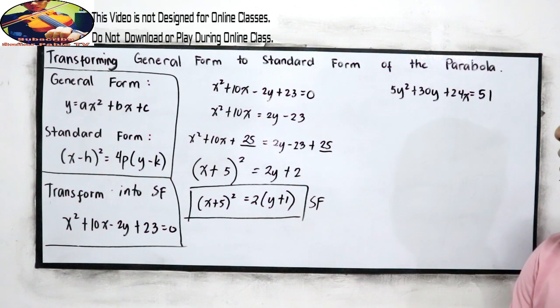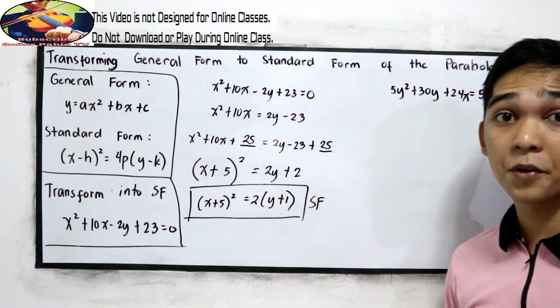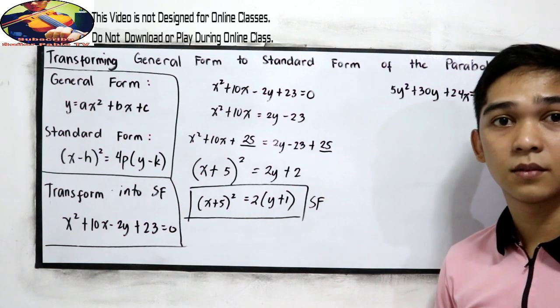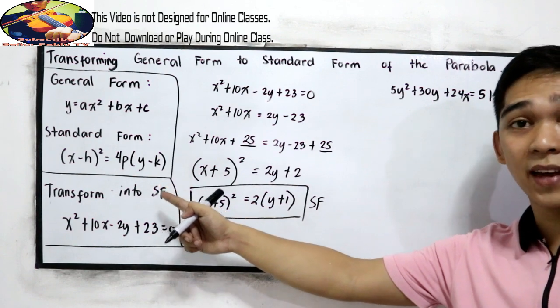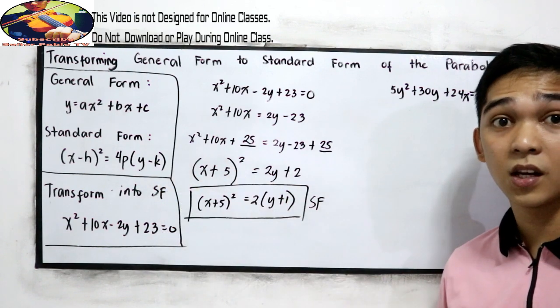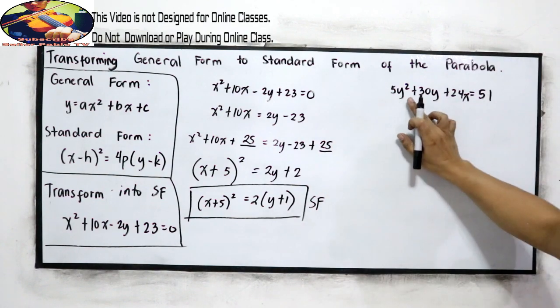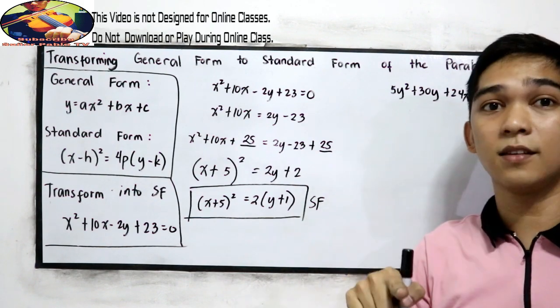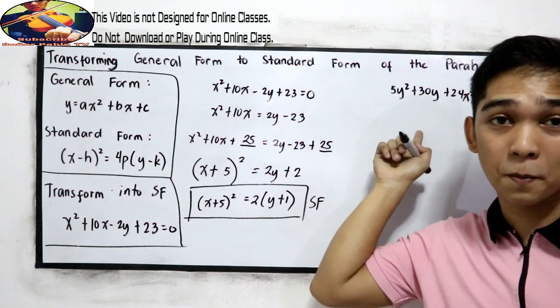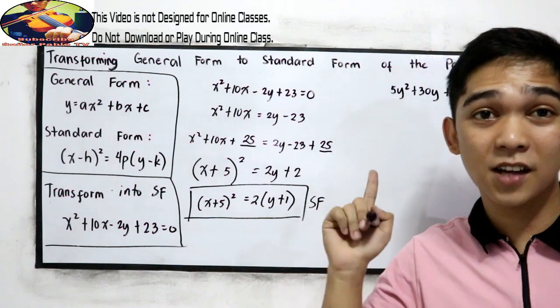So, in this case, we have y squared. So our y squared must be a perfect square trinomial. In our standard form, it depends on the openings of the parabola. So go to our first video. So if you want to try, pause the video, then try to answer this problem. And after answering, resume watching to check your answers. Okay, here's our solution.